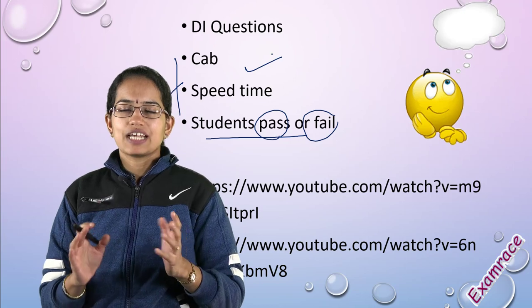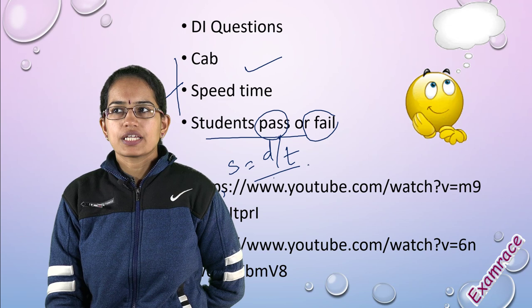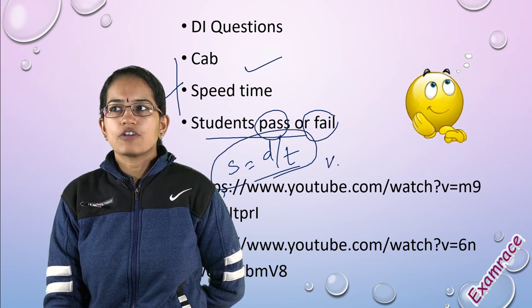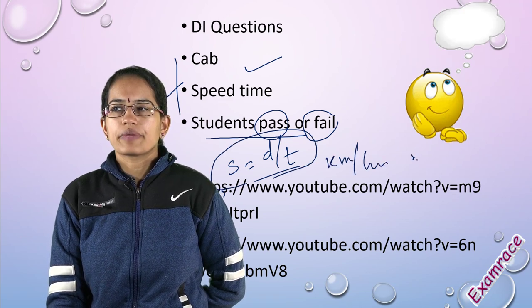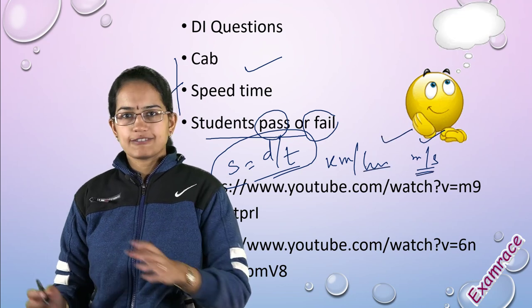There were questions on speed and time for cab. This much time covered in this much distance, so this much distance covered in this much time - you have to calculate the speed. Basically, speed is distance by time. If you know that and take care of the units - kilometer per hour or meter per second - if the units are all set, then this section was easy.